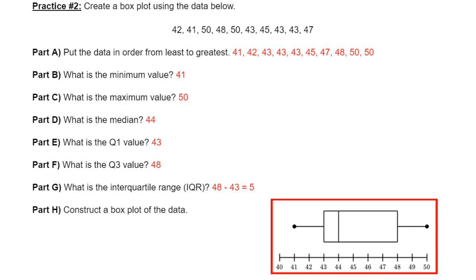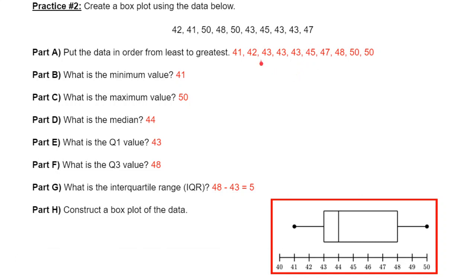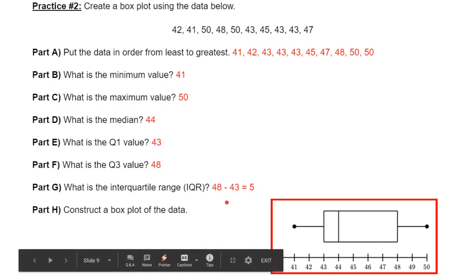Practice number two here. Remember, the first thing you do with your data for your box plots is put it from least to greatest. Then everything else comes pretty easy. You've got your minimum, your maximum. For this one, it's an even set of data. So to get your median, you have to take the average of those two numbers in the middle. To get your quarter one data, you've got to get the average of the middle of the first half of the data. To get your higher piece, you take the average of the two middle numbers in the upper half of your data. So quarter three was 48, quarter one was 43. To get your interquartile range, you find the difference of those two, and that's five.